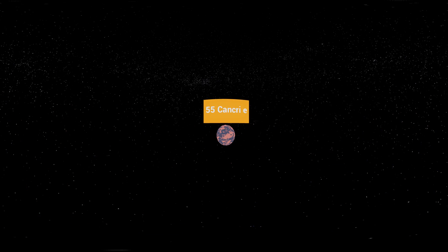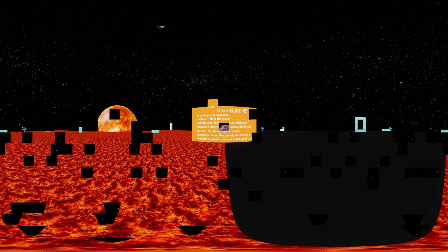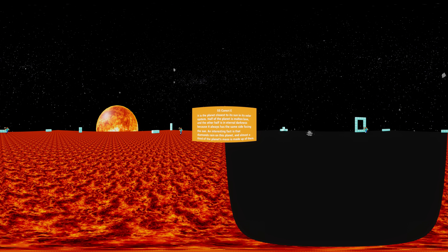Kepler-55-Cancreid. It is the planet closest to its sun in its solar system. Half of the planet is molten lava, and the other half is in eternal darkness because it always has the same side facing the sun. An interesting fact is that diamonds reign on this planet, and almost a third of the planet's mass is made up of them.